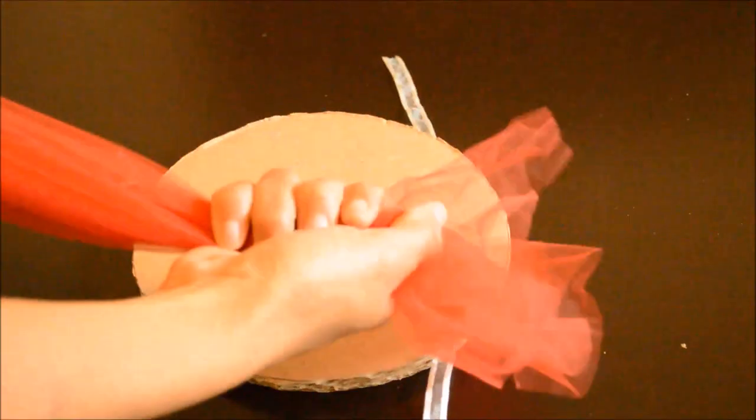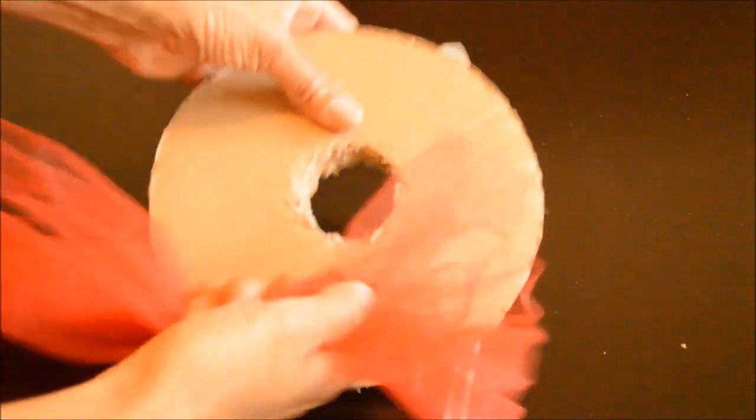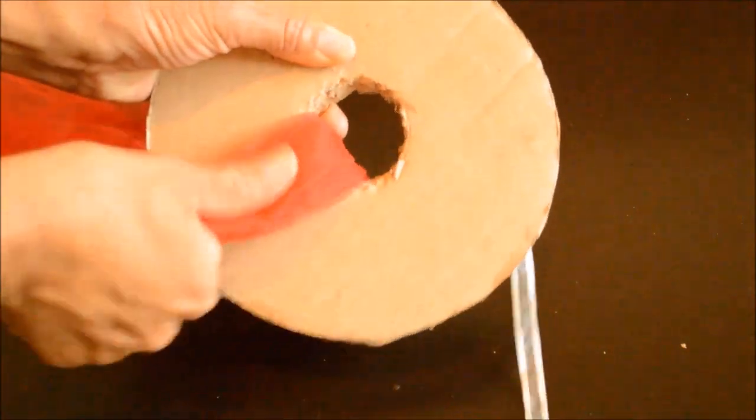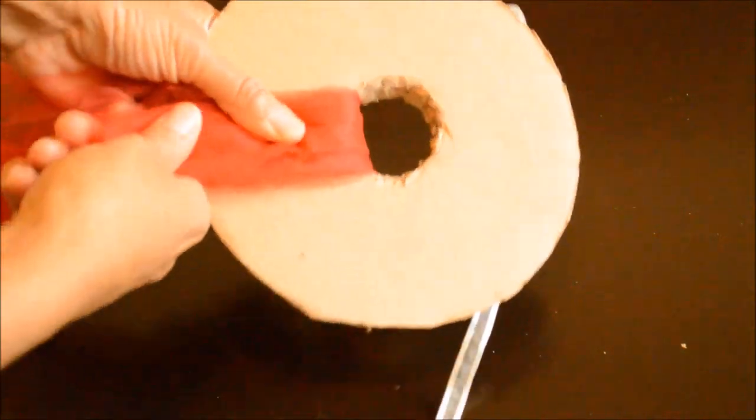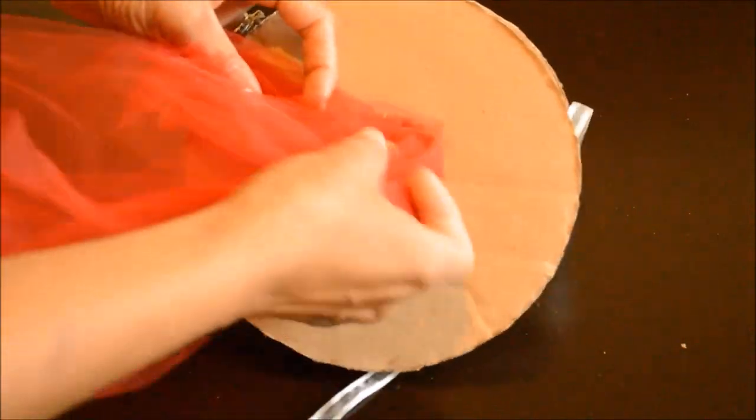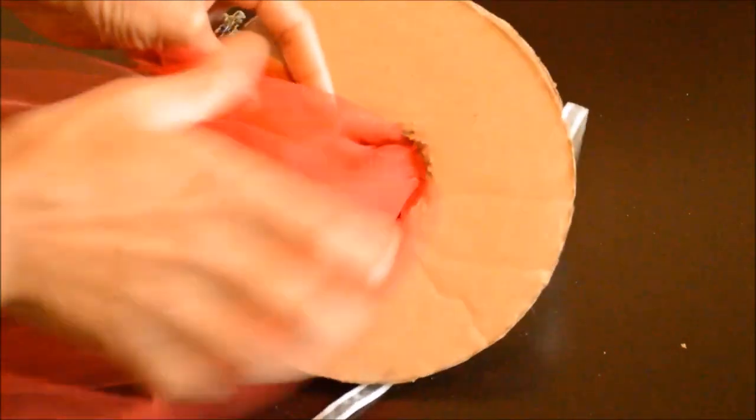What I do is start out by grabbing the very end of my tulle and pull it through. I make sure this end is pulled all the way through, just a little bit over the edge, slightly over the edge. Then I just continue to wrap it around.